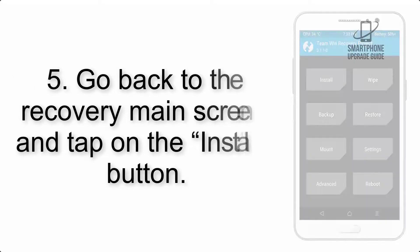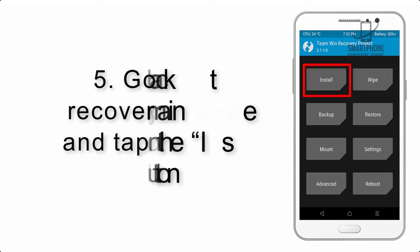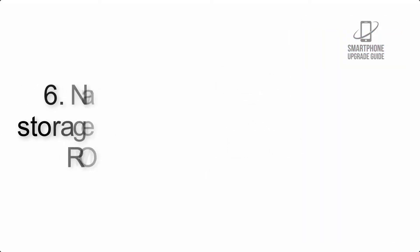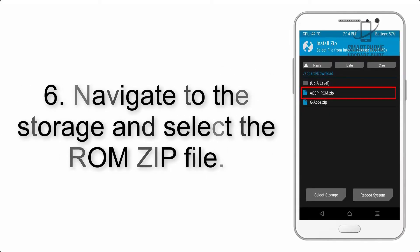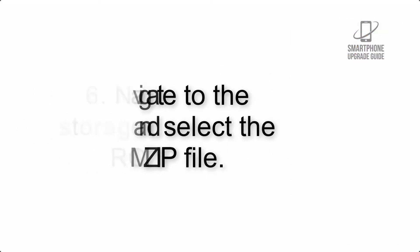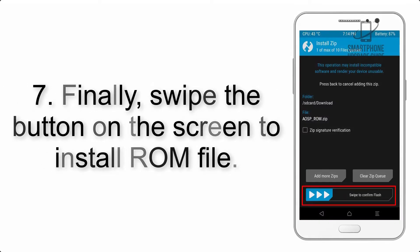Step 4: Swipe the button to wipe the device. Step 5: Go back to the recovery main screen and tap on the Install button. Step 6: Navigate to the storage and select the ROM zip file.